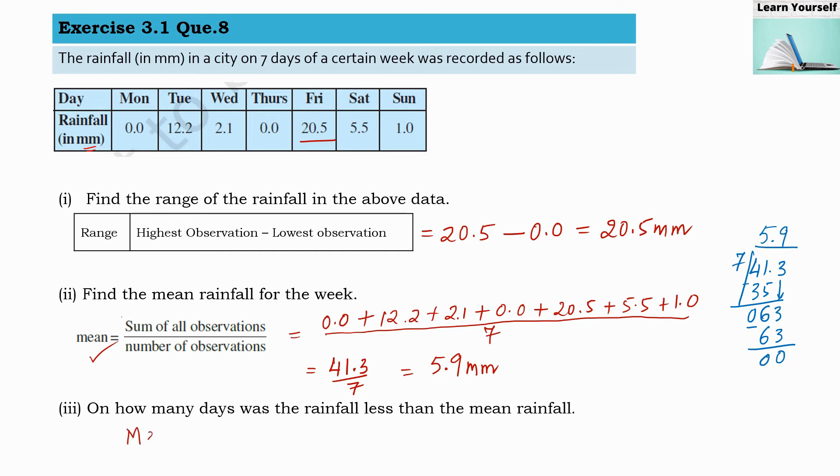Monday, yes it was less. Tuesday, no. Wednesday, yes it was less. Thursday, it was less. Friday, no, it was very high.